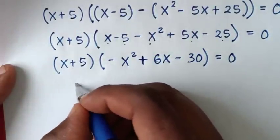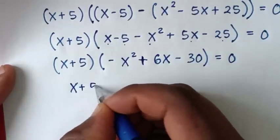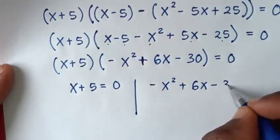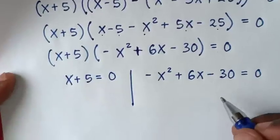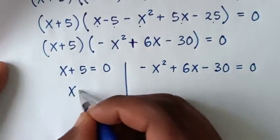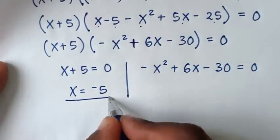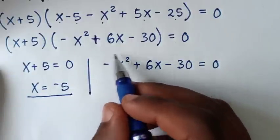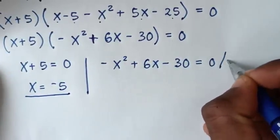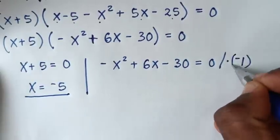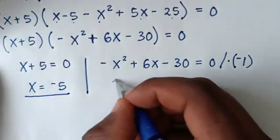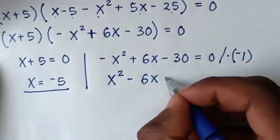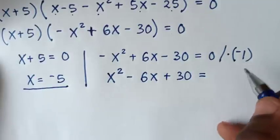Then in the next step, we have two solutions. The first solution is x plus 5 is equal to 0, and the second solution is minus x squared plus 6x minus 30 is equal to 0. From the first solution, we take 5 to the other side, so x is equal to negative 5. This is the first value of x, which is a real solution. From the quadratic equation, we'll multiply the whole equation by negative 1 to make it positive: x squared minus 6x plus 30 is equal to 0.